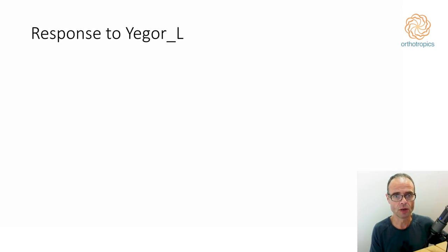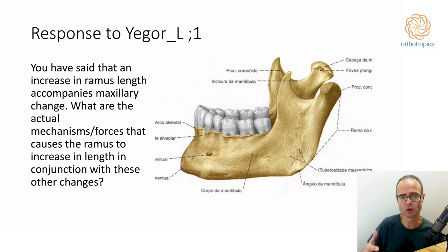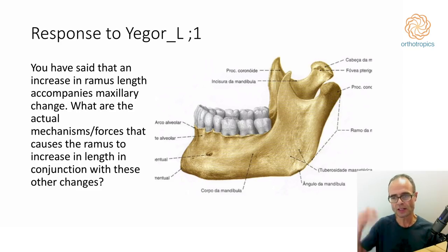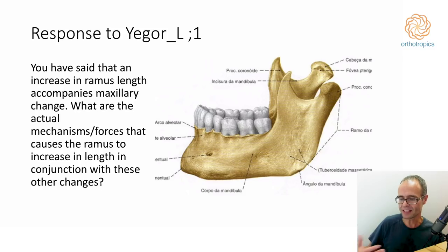First, a response to Yegor L. Yegor has two questions. He says: 'You have said that an increase in the ramus length accompanies maxillary change. What are the actual mechanisms and forces that cause the ramus to increase in length in conjunction with these changes?' Let's first identify exactly what the ramus is. This section here is the ramus, and this is known as the body of the mandible. I think the overall distance is approximately set genetically — these things do change, but not by a great deal in most normal situations.